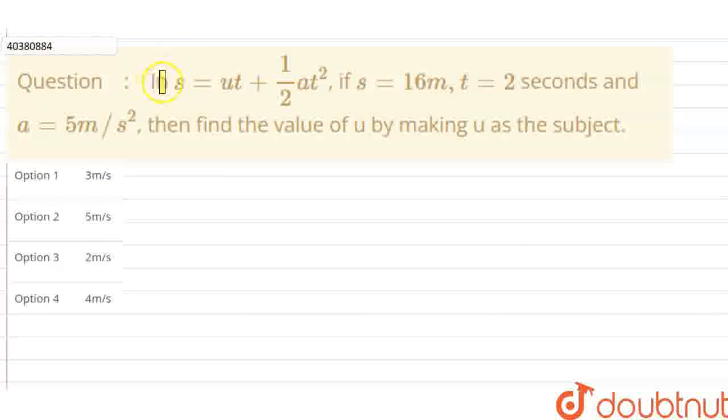Hello friends, what is this question given? In s = ut + ½at², this is the question given. If s is 16 meters, t is 2 seconds and a is 5 m/s², then find the value of u by making u as the subject. You need to find out u. There are 4 options given.